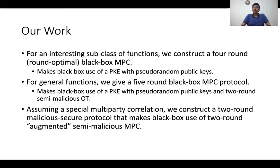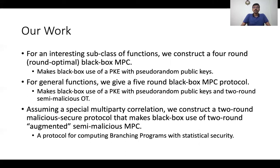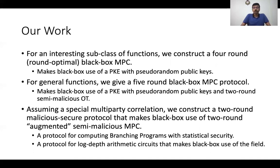Specifically, assuming a special form of multi-party correlation, we construct a two-round malicious secure protocol that makes black box use of a two-round augmented semi-malicious MPC. By augmented semi-malicious MPC, we mean a semi-malicious MPC protocol that satisfies some weak form of adaptive security with erasures. Prior protocols in the multi-party correlation model made extensive use of the protocol garbling technique and hence had very high computational cost, whereas our protocols are extremely simple. Two interesting corollaries are: first, a two-round protocol for computing branching programs with statistical security against malicious adversaries; and second, a two-round protocol for log-depth arithmetic circuits that makes black box use of the underlying field.